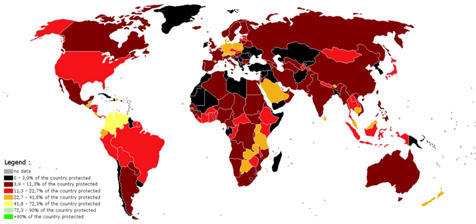Natura 2000 is a network of protected areas established by the European Union across all member states. It is made up of Special Areas of Conservation and Special Protection Areas designated respectively under the Habitats Directive and Birds Directive. 787,767 km² are designated as terrestrial sites and 251,564 km² as marine sites. Overall, 18% of the EU land mass is designated.